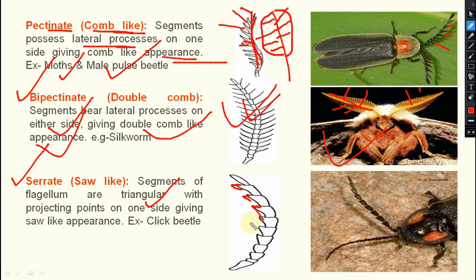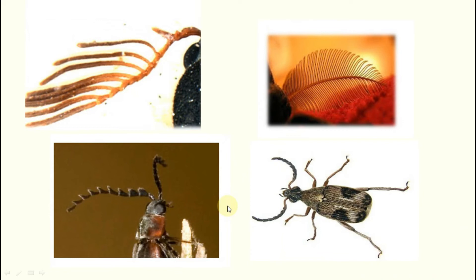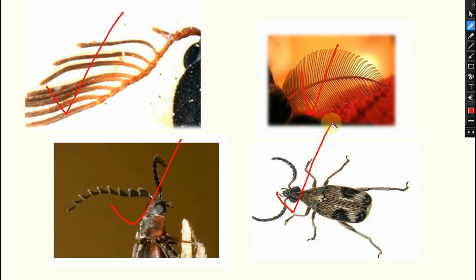Next one is serrate — that is saw-like. Segments of the flagellum are triangular and projecting points on one side, giving a saw-like appearance. Example is click beetles. So to summarize: pectinate means comb-like, bipectinate means double comb-like, and serrate means saw-like — you have to remember these things.